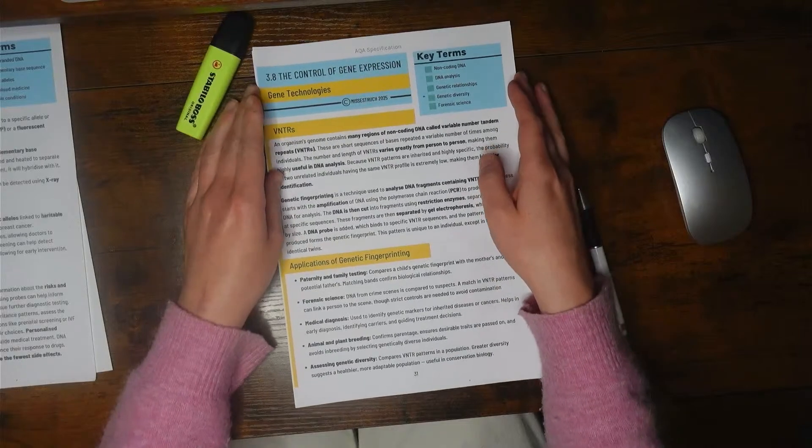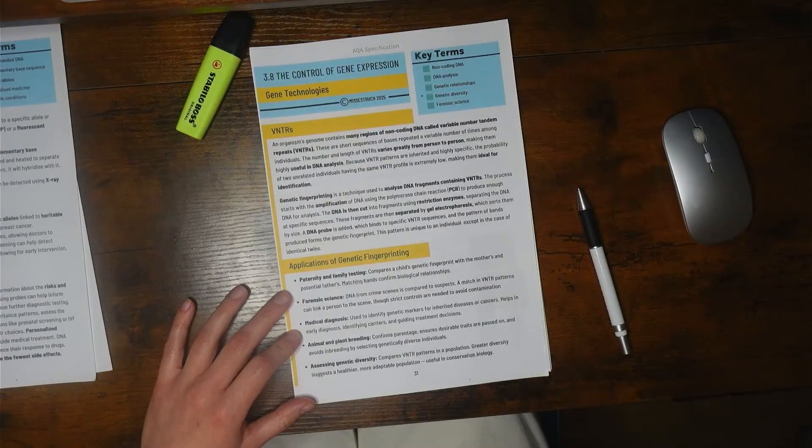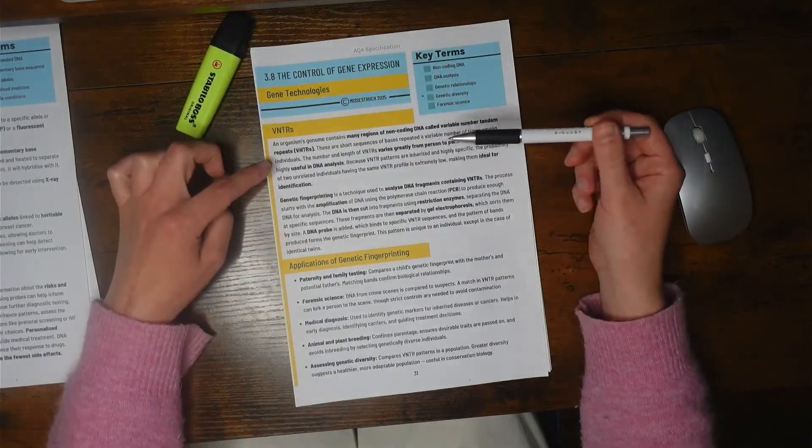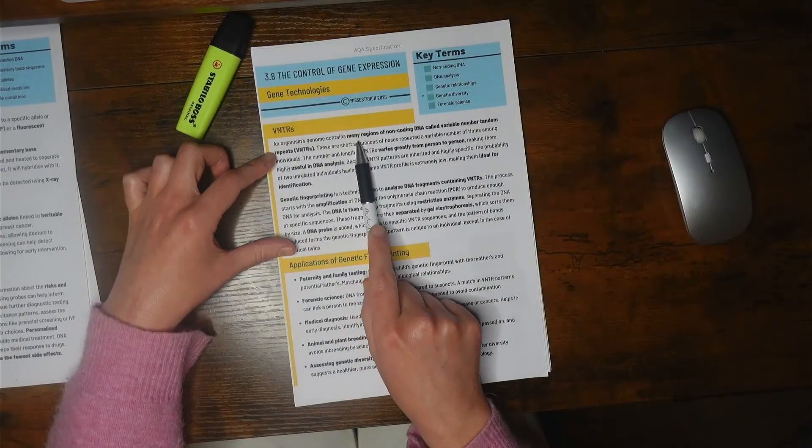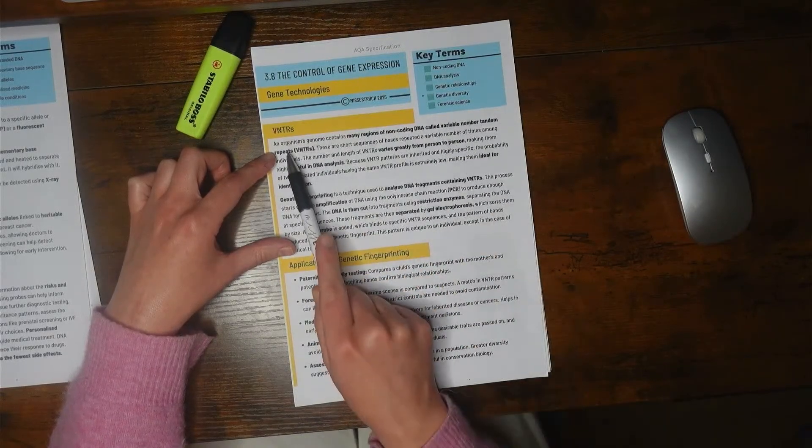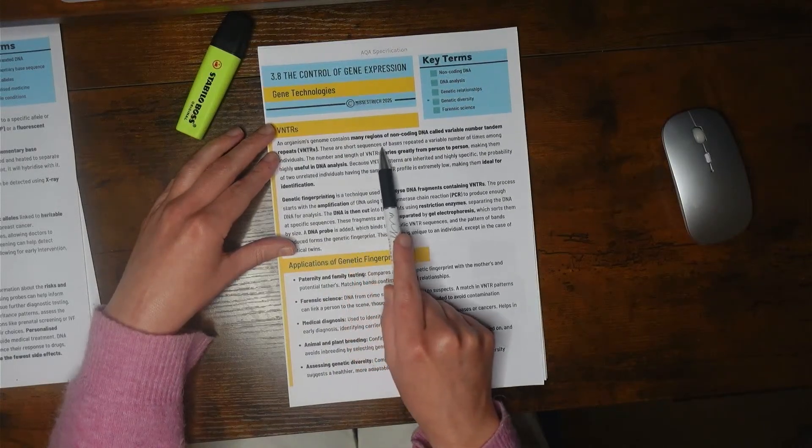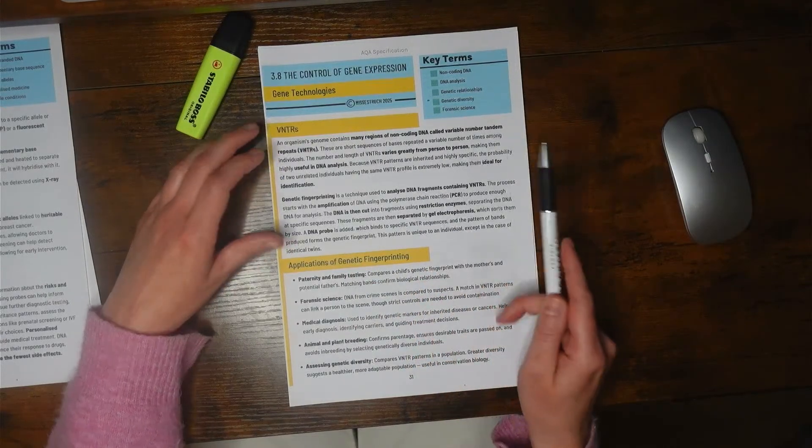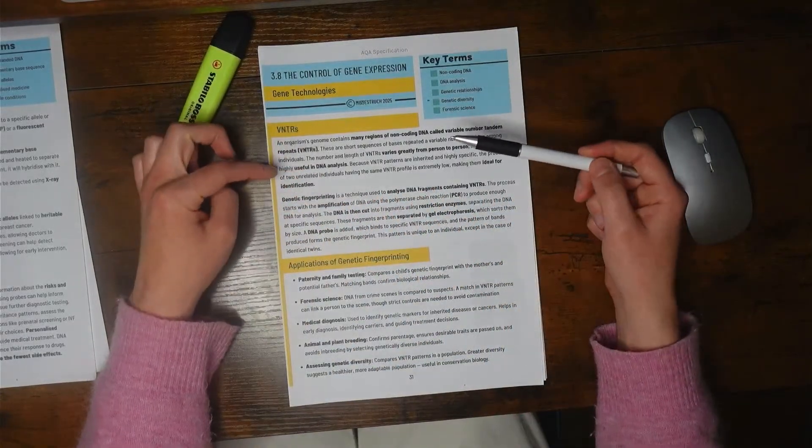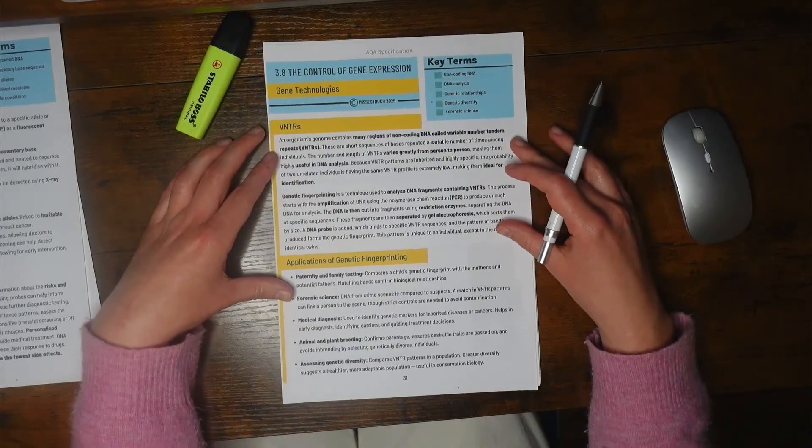We're going to be going through genetic fingerprinting for A-level. As a recap, genetic fingerprinting uses the concept of VNTRs. VNTRs are regions within your DNA, non-coding regions which have variable number tandem repeats. These are short sequences of bases repeated over and over, but those VNTRs are unique to an individual.